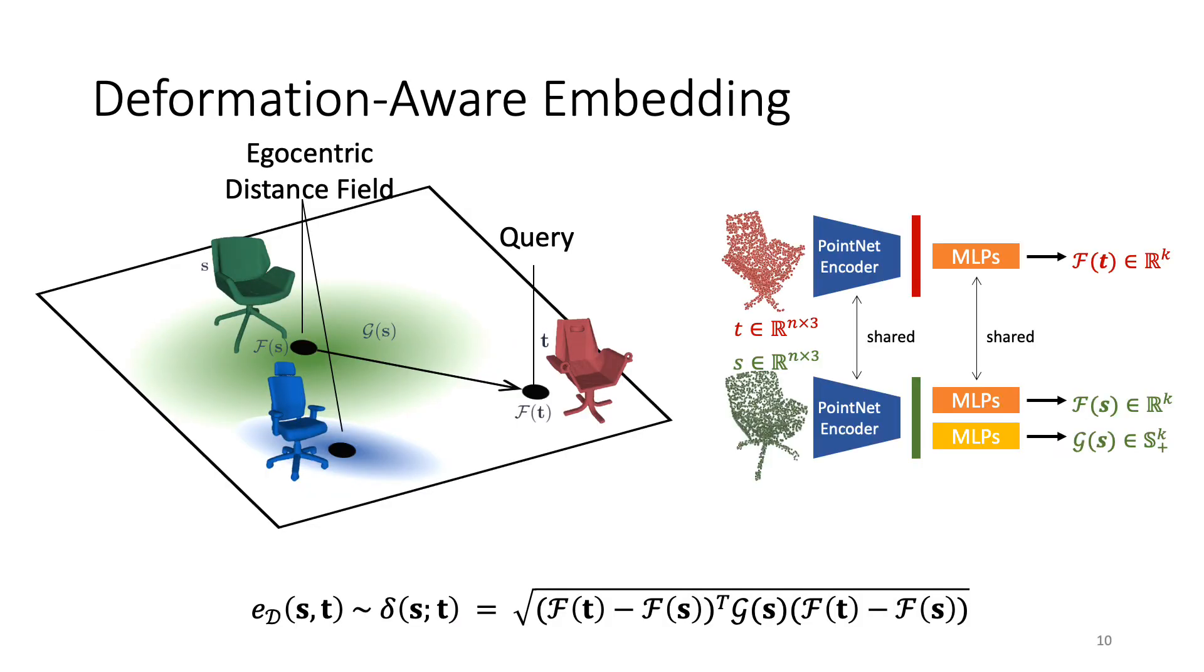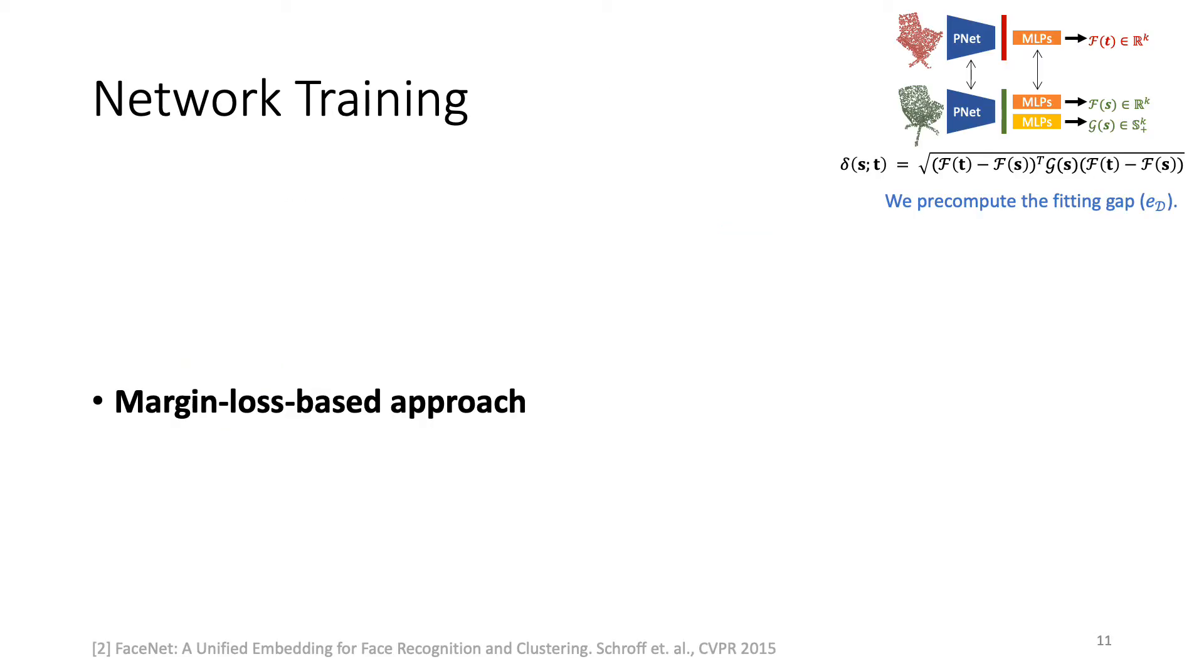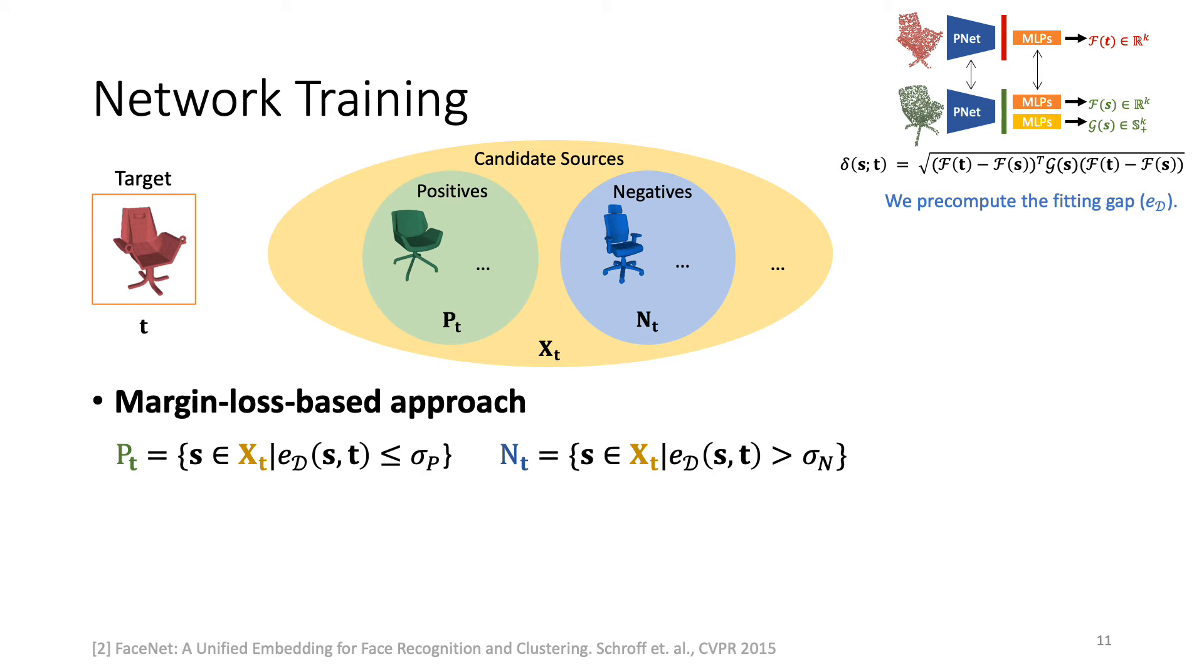We use a neural network with a Siamese architecture to learn G for each source shape and shape-latent code F for both the source and the target shapes. Furthermore, we introduce two network training strategies to learn our deformation-aware embedding space. Our first approach is a margin-loss-based approach. For each query T, we select a set of candidate sources XT, where we pre-compute the fitting gaps. We then define a subset of positive samples PT and a subset of negative samples NT, based on the fitting gaps being smaller and larger than the chosen threshold, respectively. We then train our embedding network using the margin-loss, as in standard metric-learning works, where the positive distance must be smaller than the negative distance by a margin M. The difference is we use our embedding distance delta, which is asymmetric.